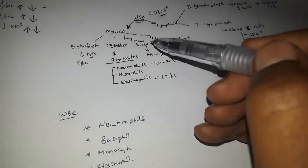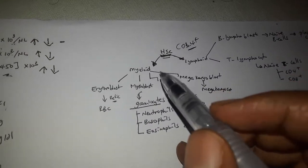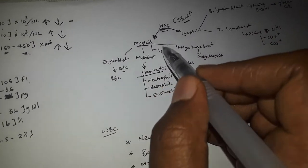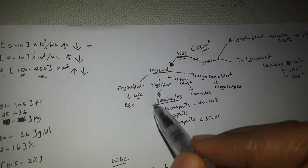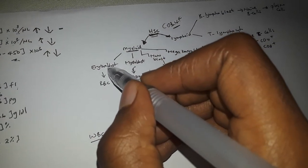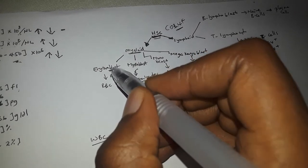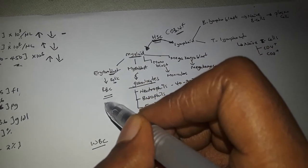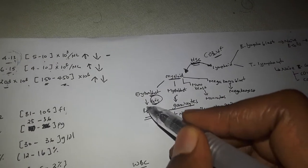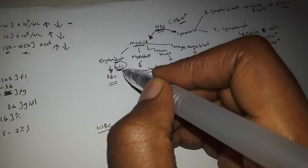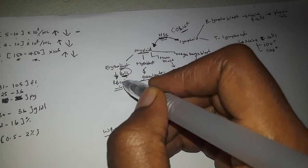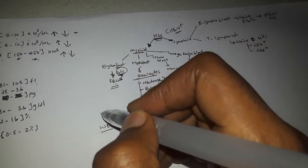From myeloid stem cells, there are erythroblasts. If you have an erythroblast, it differentiates into red blood cells. The red blood cells will have a reticulocyte stage — the reticulocyte is the immediate precursor to the mature red blood cell.